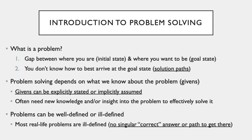An example of an ill-defined problem in an academic setting would be a short answer or essay in which you're never quite sure if you've perfected it — and of course, the clearer the grading rubric, the more well-defined the writing assignment. Most real-life problems are ill-defined; there's no singular correct answer or path to getting there. For example, what is the best strategy for wanting to have a date with your co-worker, improving the environment, or making your business more successful?